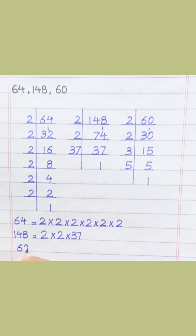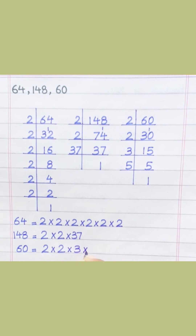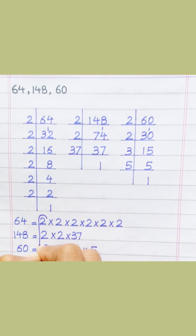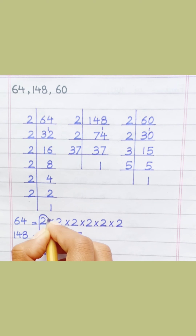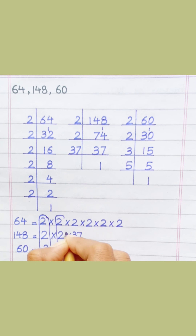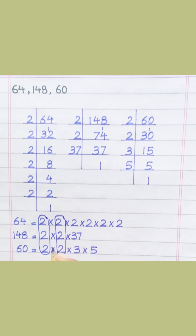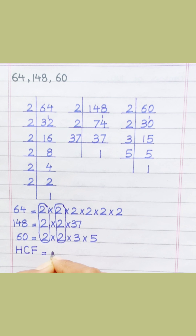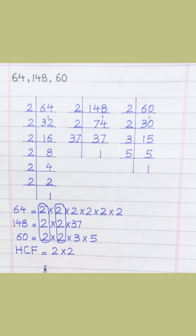Sixty equals two multiply two multiply two multiply three multiply five. Four multiply two multiply three multiply five. Loop the factors that are common to all of the given numbers. Two multiply three multiply two multiply two multiply two multiply four.